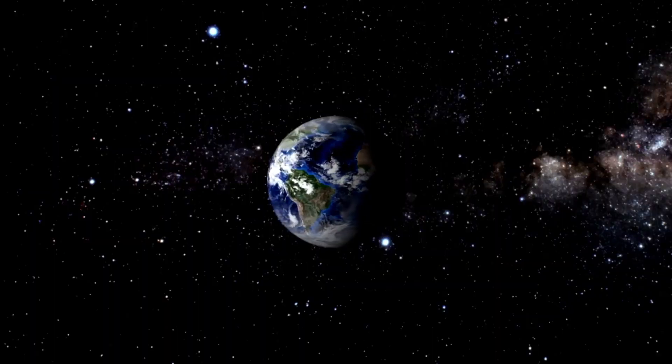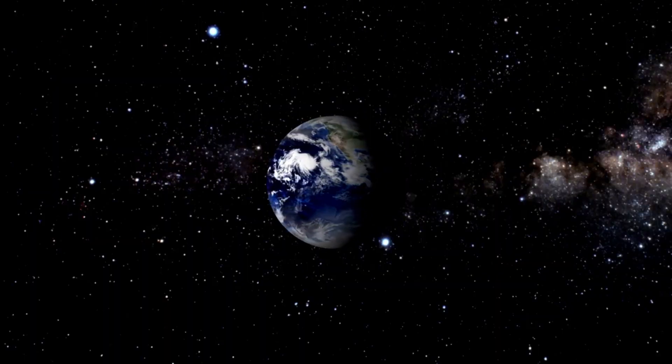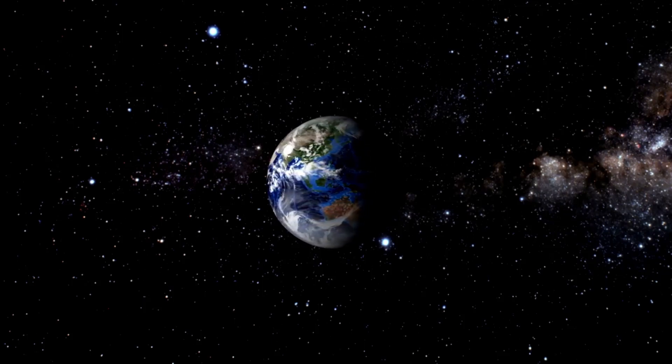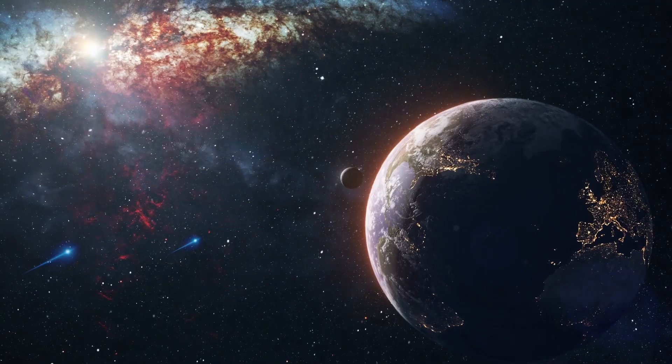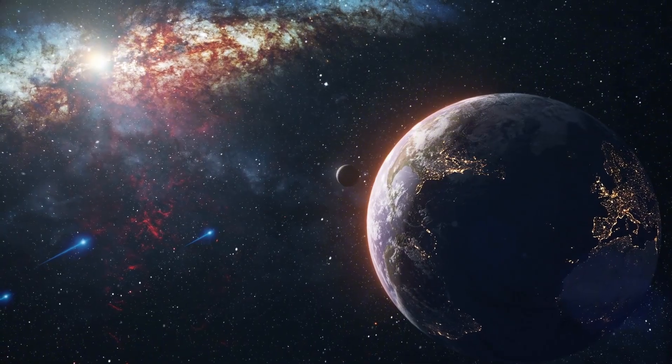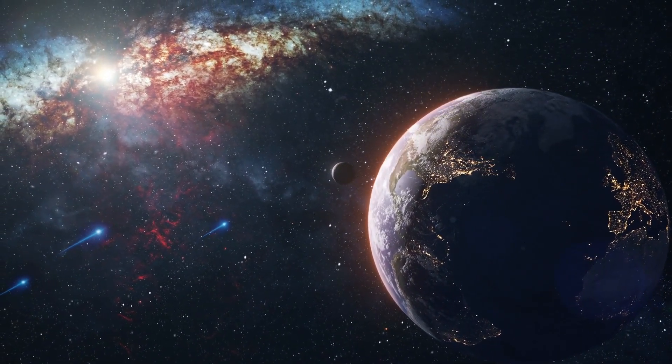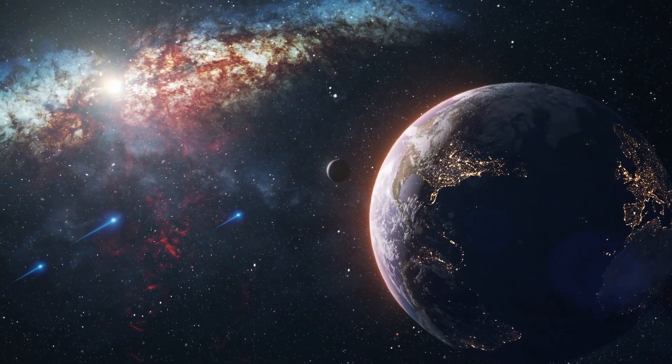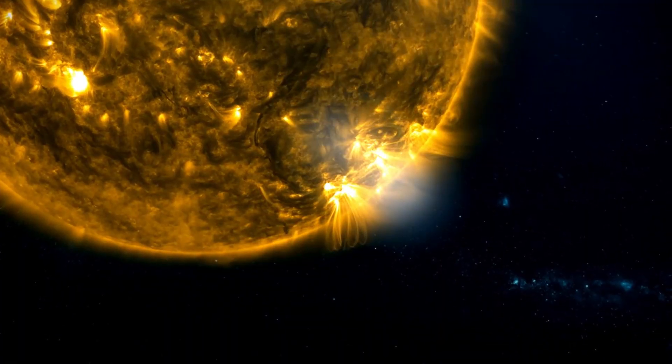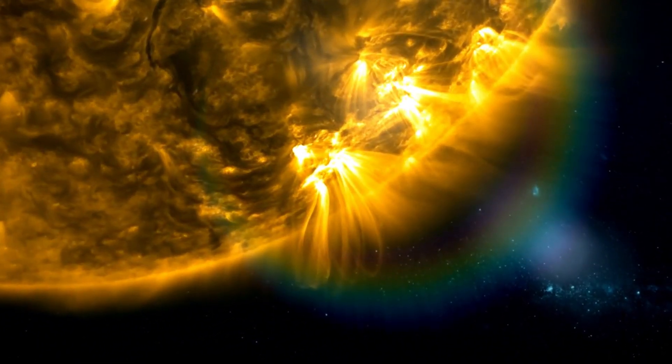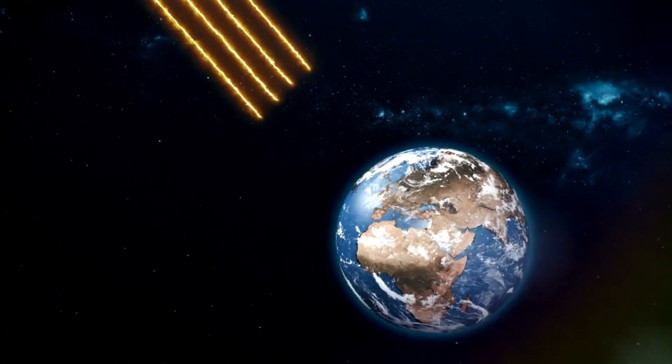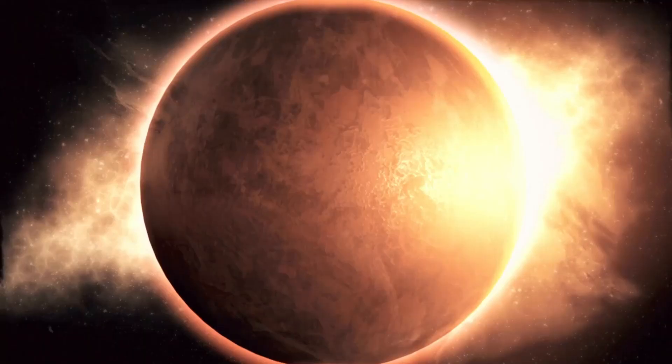In addition to gas giants, there are also Neptunian exoplanets, which are similar in size to Uranus and Neptune. Among these are hot Neptunes and mini-Neptunes, which are smaller and closer to their host stars than their gas giant cousins. These planets are often shrouded in mystery, making their atmospheres difficult to study from afar.